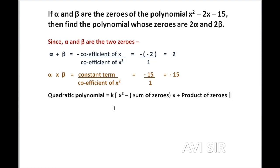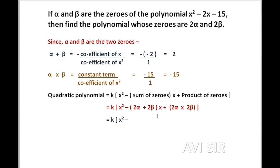Now let's write the formula. We write k times x squared minus the sum of zeros times x plus the product of zeros. The two zeros are 2 alpha and 2 beta, so the sum of zeros is 2 alpha plus 2 beta, and the product of zeros is 2 alpha multiplied by 2 beta. Taking 2 common from the sum gives us 2 times alpha plus beta, and the product gives us 4 times alpha beta.